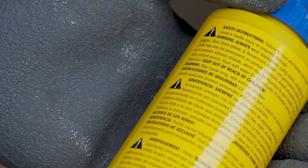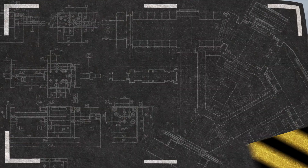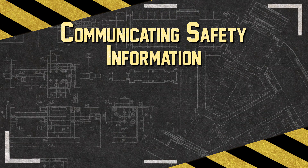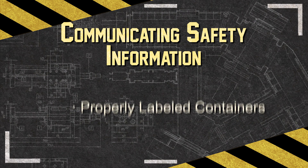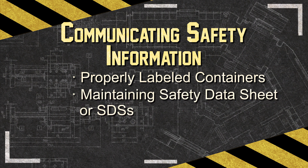There are two primary methods of communicating chemical safety information. One, ensuring containers of hazardous chemicals are properly labeled. And two, maintaining safety data sheets, or SDSs, which are sources of detailed information on the hazardous chemical.